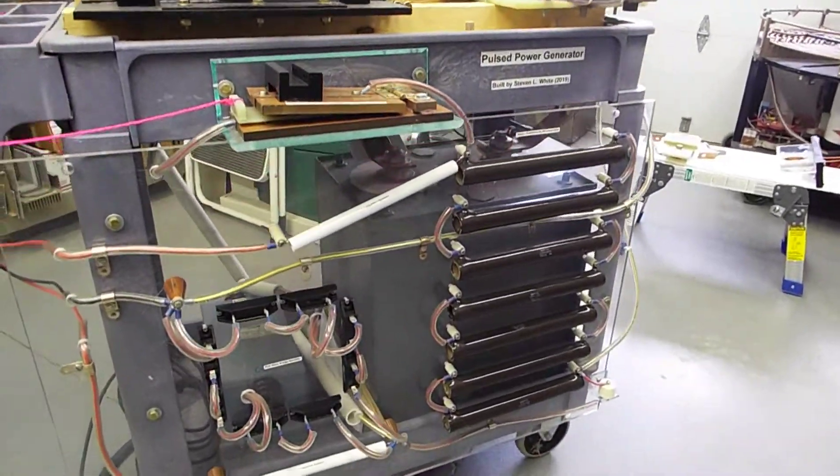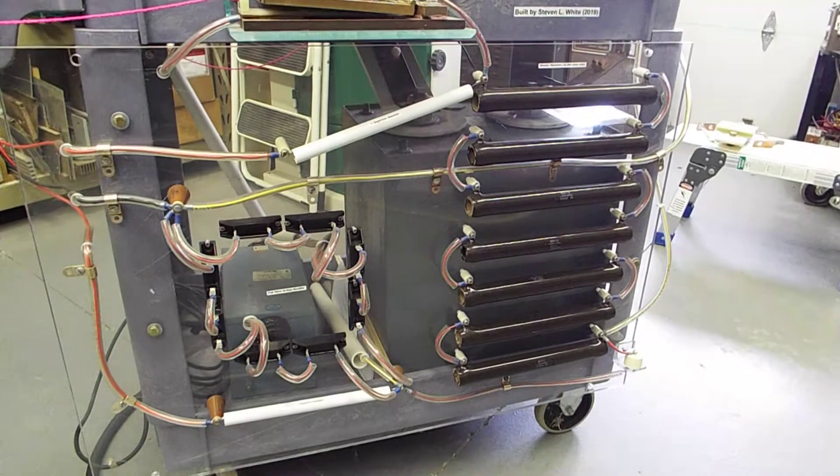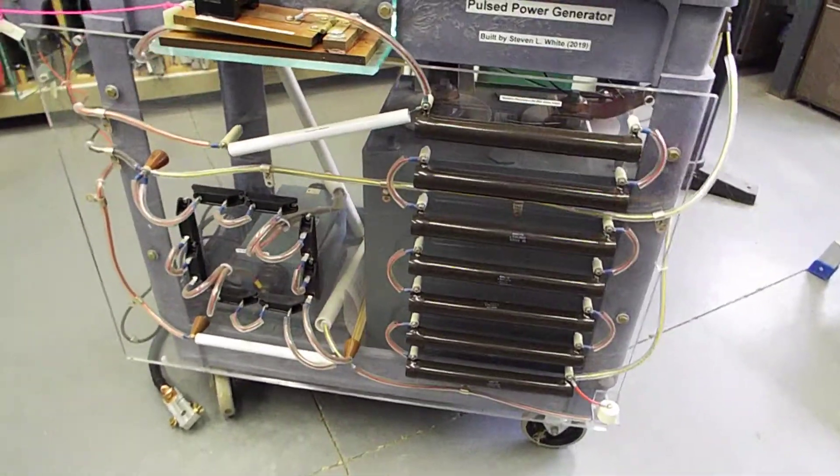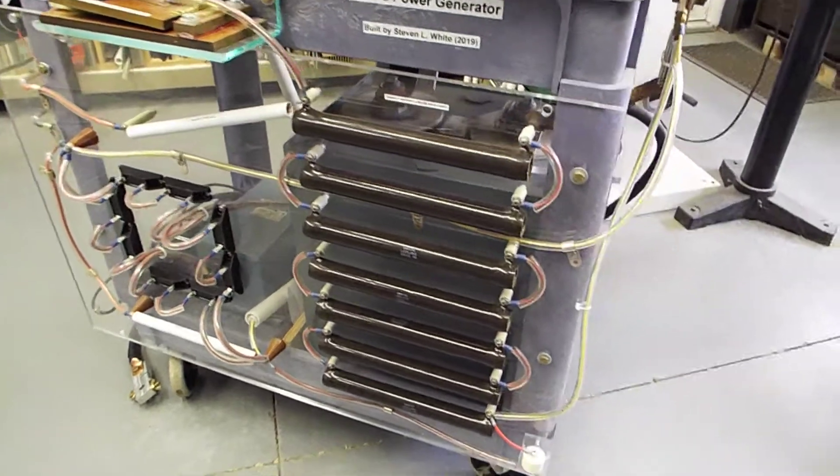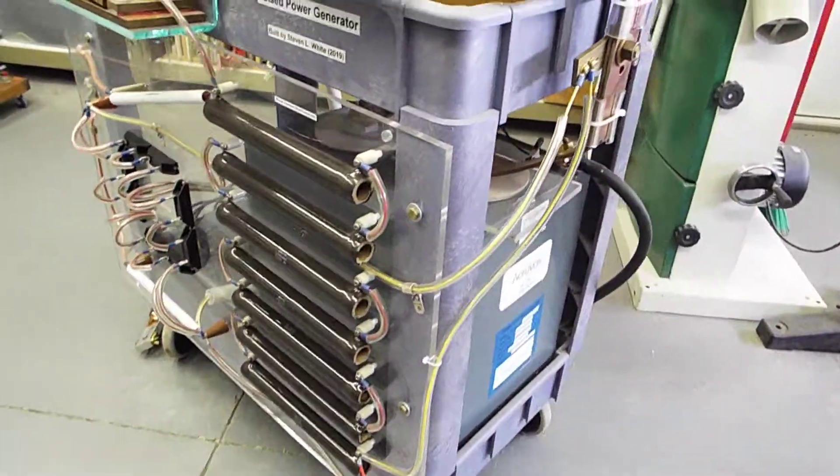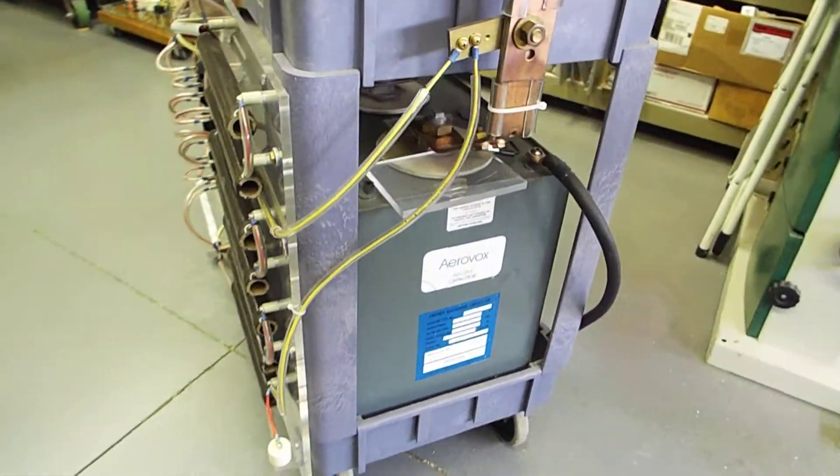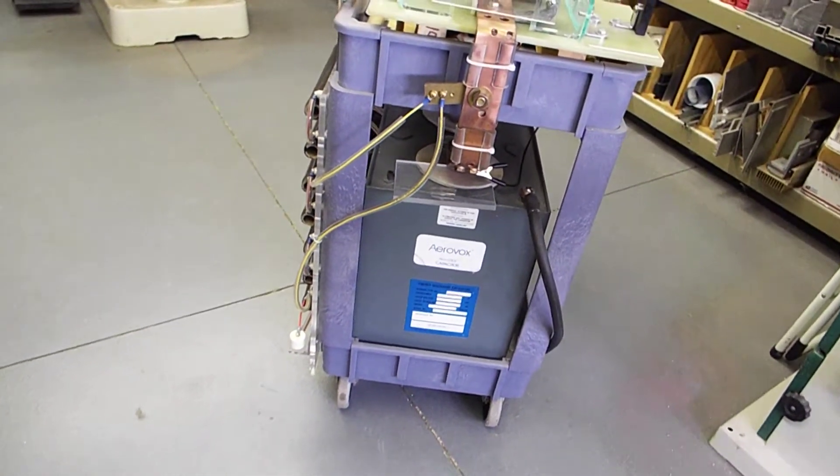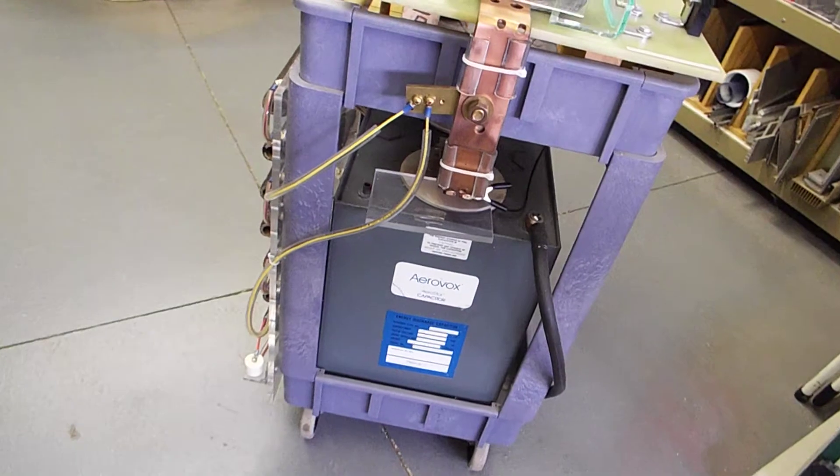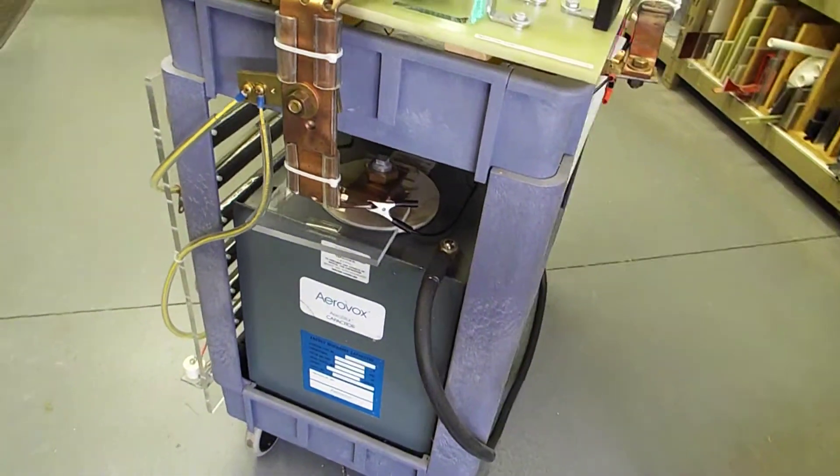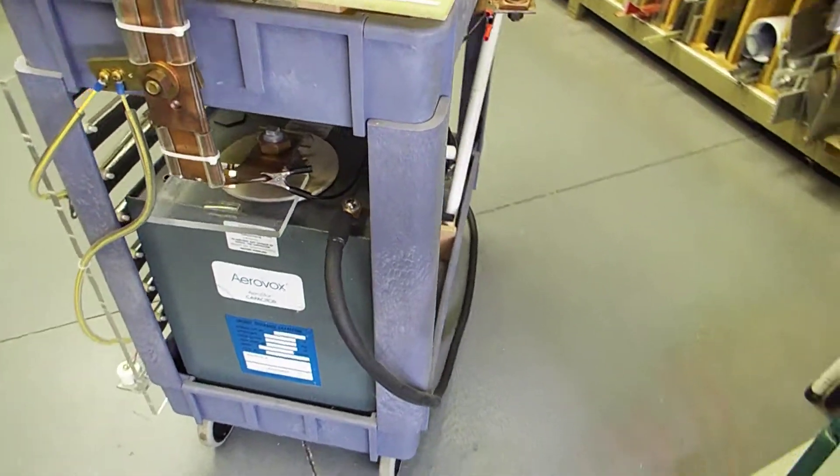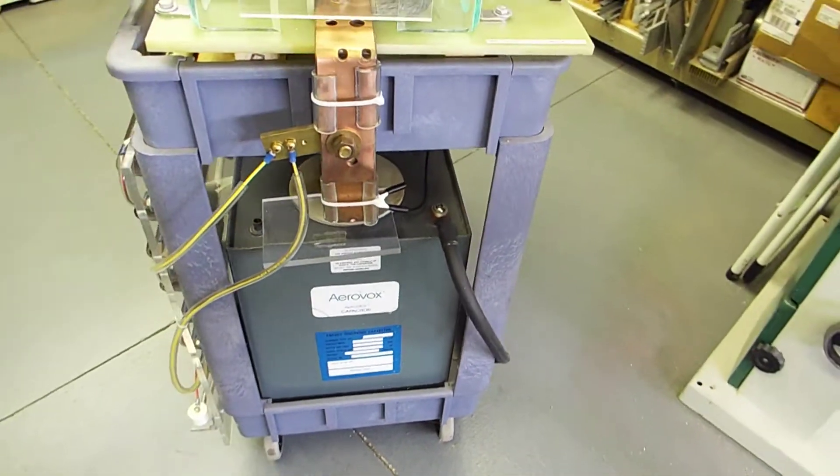You can see the capacitor down here. It's the big gray brick. And I'll slowly move around so maybe you can see that better. There's the end of the capacitor. The capacitor weighs about 220 pounds. It can store up to 24,000 joules if it was fully charged to 22,000 volts.